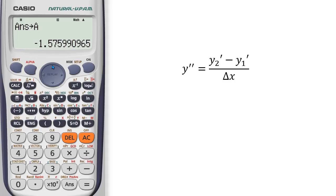Note that y double prime is equal to y sub 2 prime minus y sub 1 prime over the change of X. And we know that our change of X is 1 times 10 raised to negative 5.